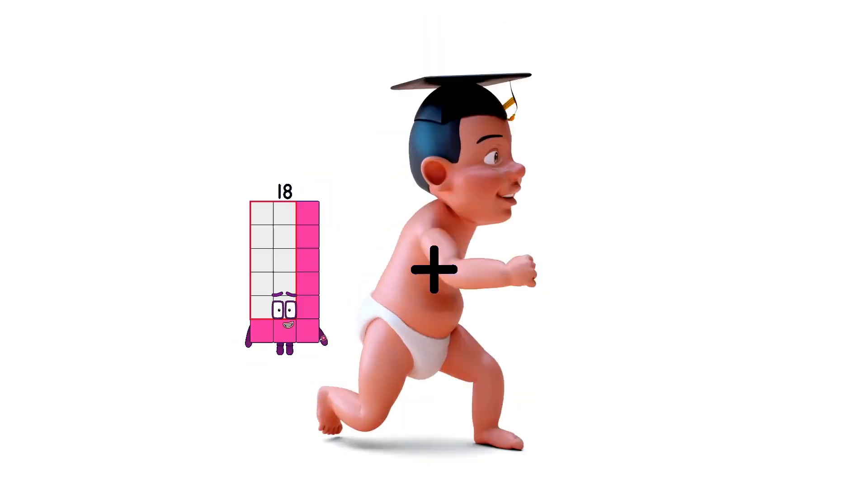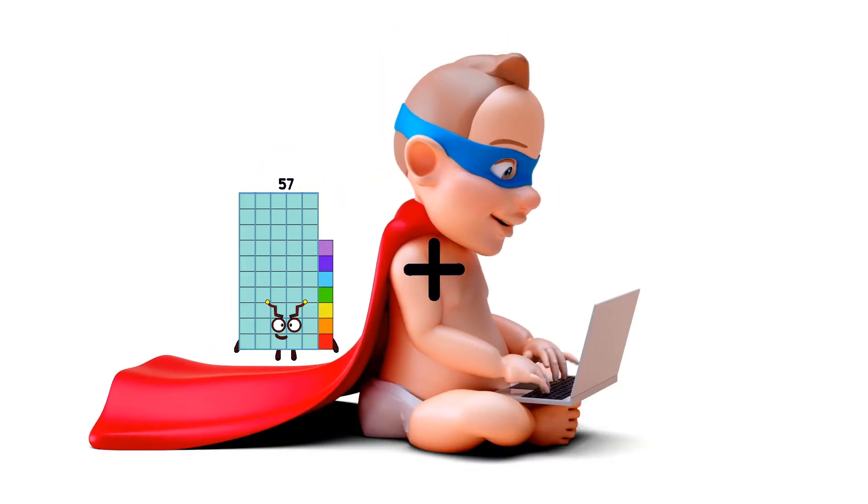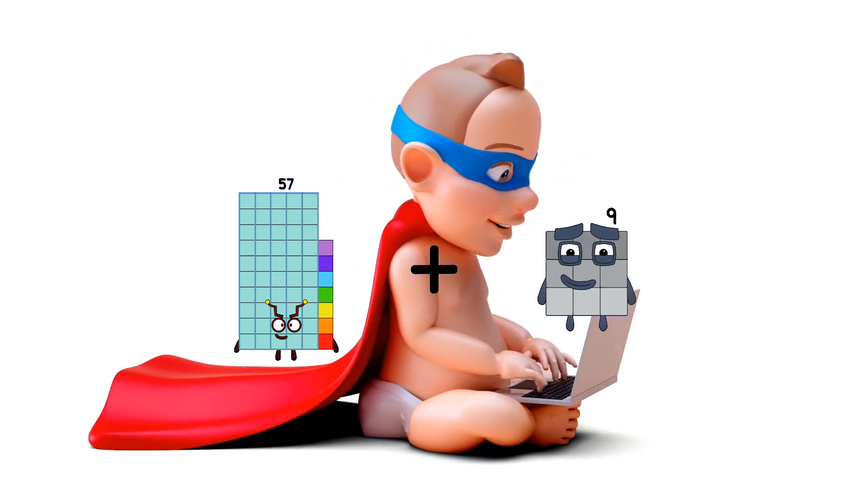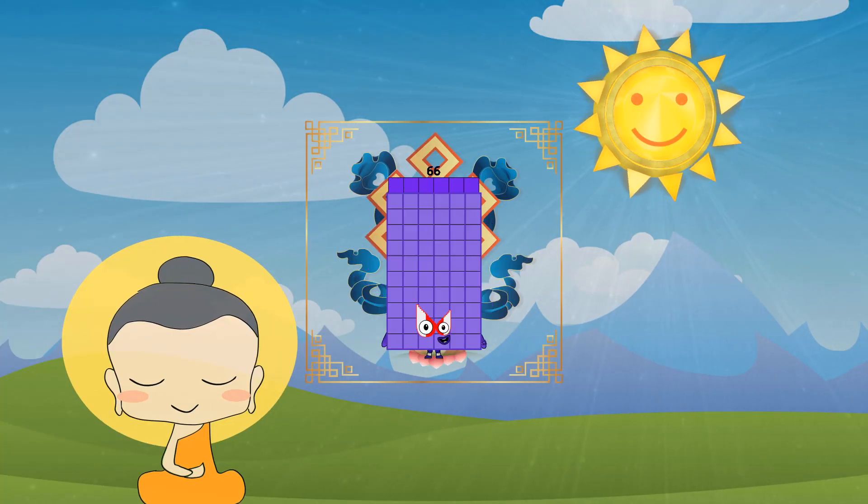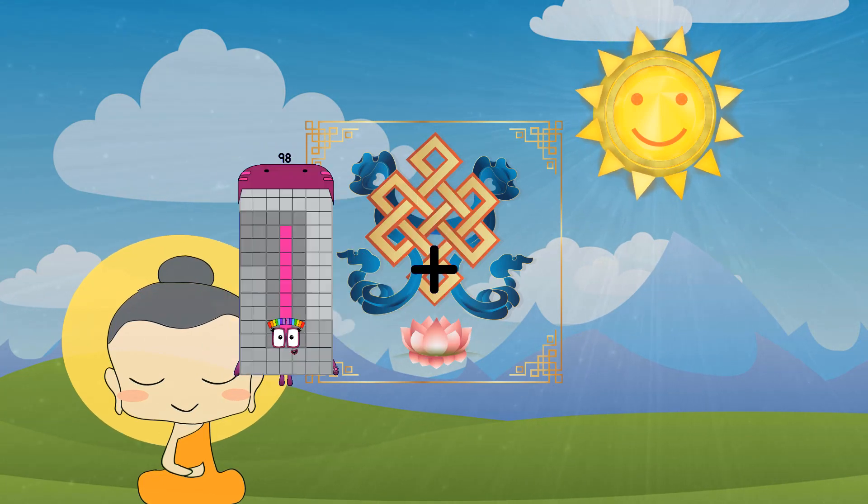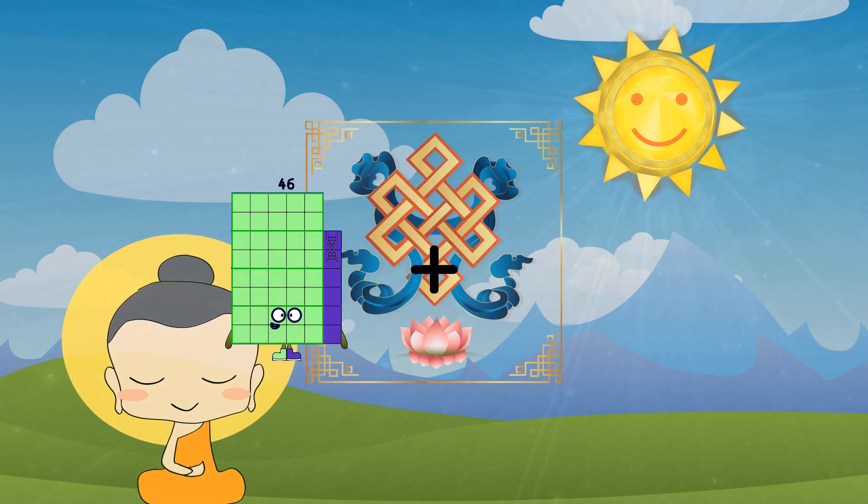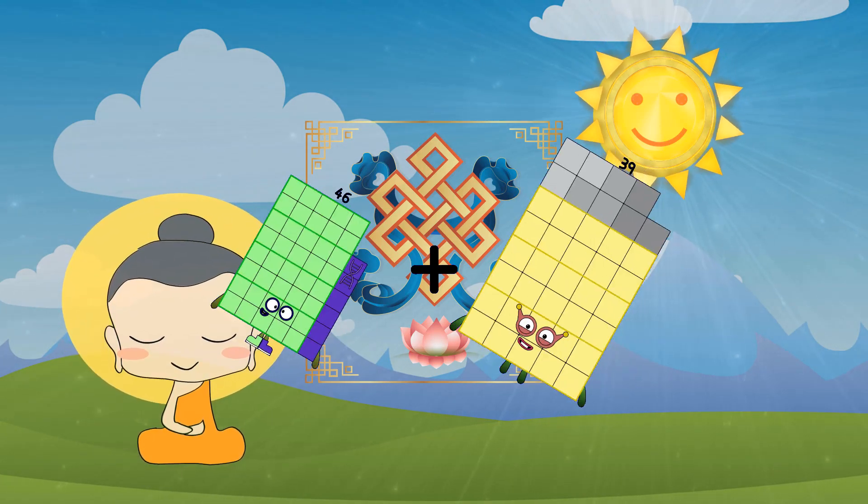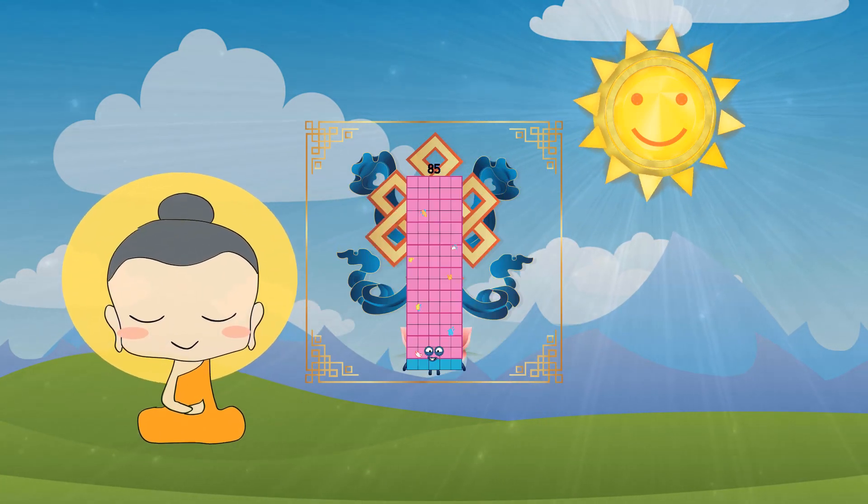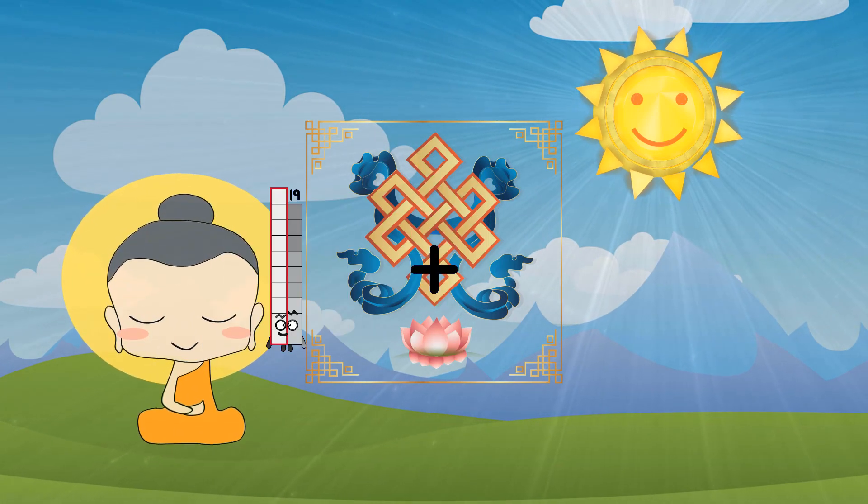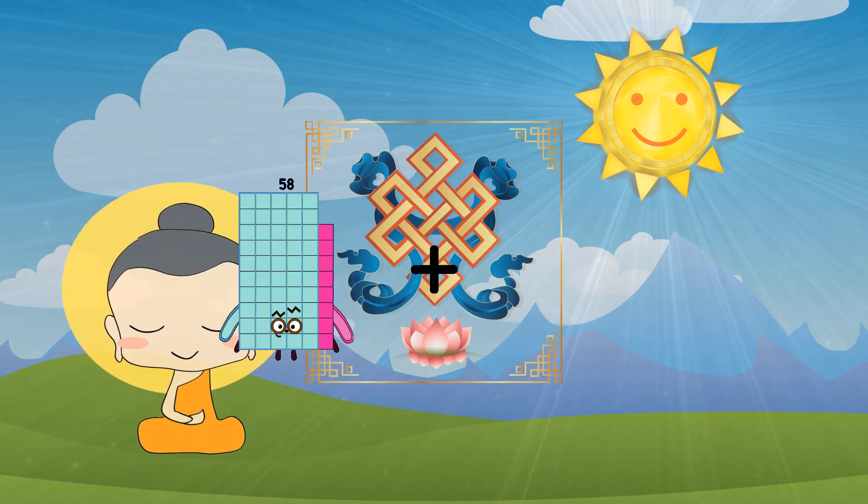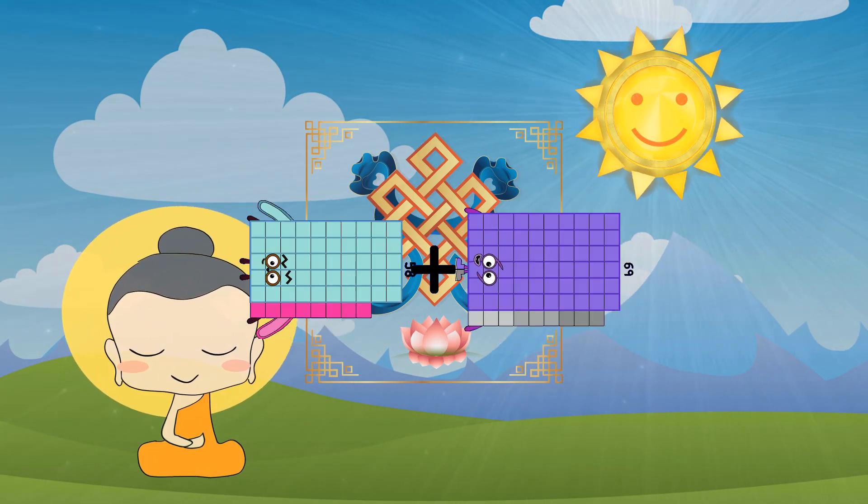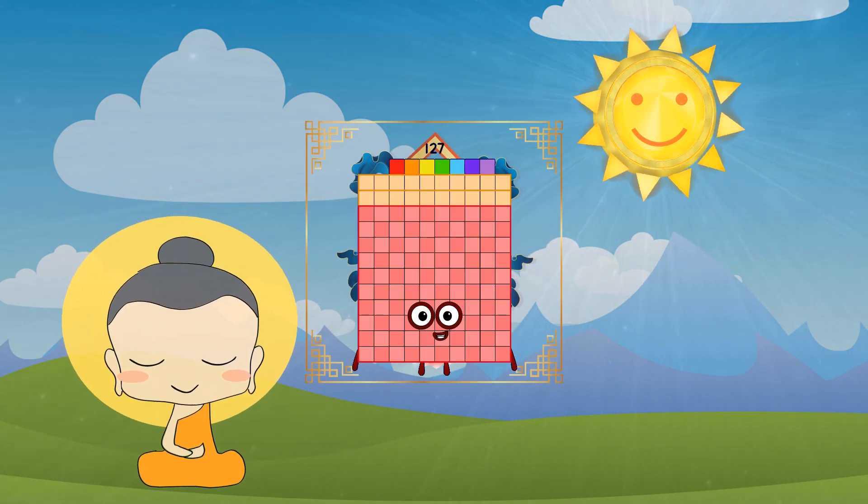57 plus 9 equals 66, 46 plus 39 equals 85, 58 plus 69 equals 127.